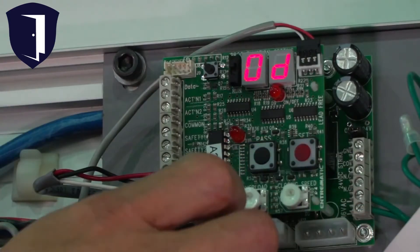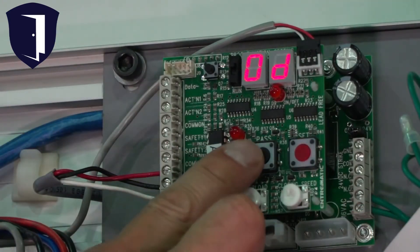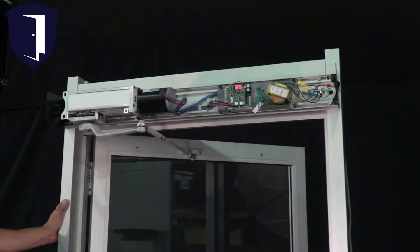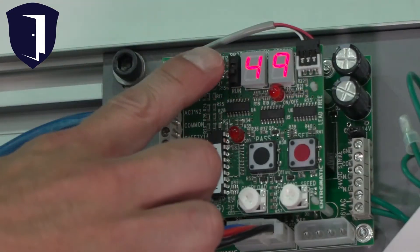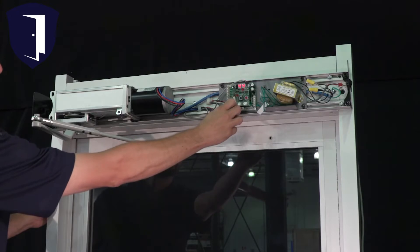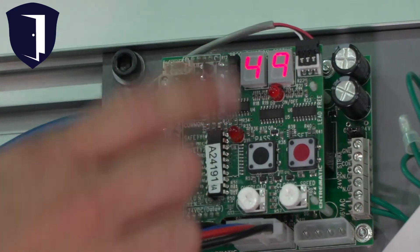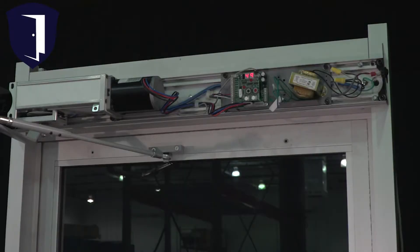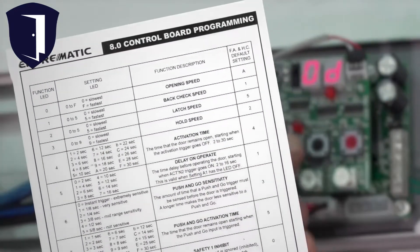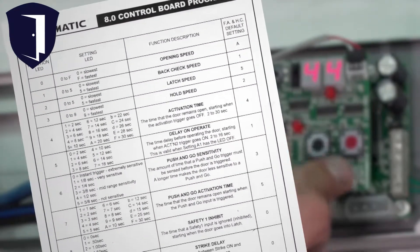A number of additional functions can be adjusted directly on the control board, including opening speed and activation time, among others. Set the program run switch to the program position. Choose the function to be adjusted with the pass button on the left. Then, choose the desired setting with the set button on the right. Be sure to set the switch back to run once programming is complete. The manual has a full list of the many functions and settings available with the HA8LP.